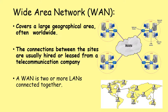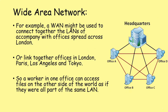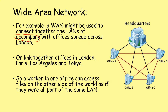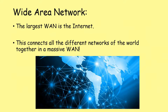You can think of a WAN like multiple LANs connected together over a long distance. For example, a wide area network might be used to connect together the LANs of a company with offices spread across London, or to link together offices in London, Paris, Los Angeles, and Tokyo. This means a worker in one office can access files on the other side of the world as if they're all part of the same local area network. Of course, the largest wide area network is the internet — the internet connects together all the different wide area networks of the world in one massive WAN.